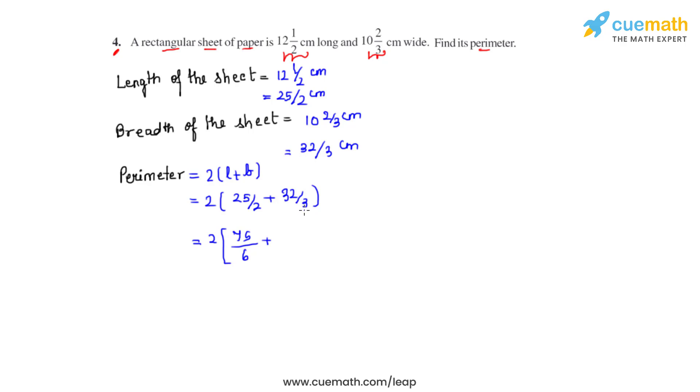To make the denominator as 6 for the second fraction we'll multiply the numerator and denominator with 2. So 32 times 2 gives us 64 and 3 times 2 gives us 6.